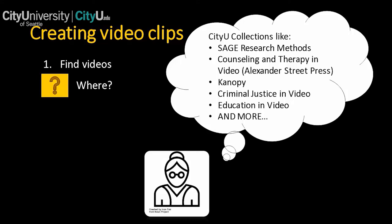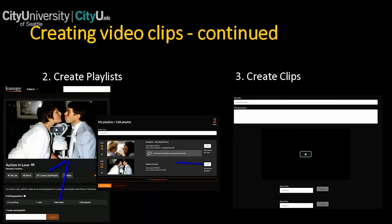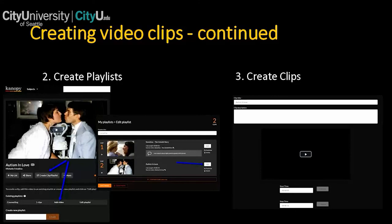The videos are in the database collections. We have a large collection including Sage Research Methods, Alexander Street Press, and Canopy — which has many psychology videos and feature films you could edit — plus criminal justice, education, business, and more. A best practice in video collections is to create playlists you can share with students, and that is also how you create shorter clips. From your playlist, you can edit videos, add a title and description telling students what to focus on, and hit start and stop buttons to create your clips.